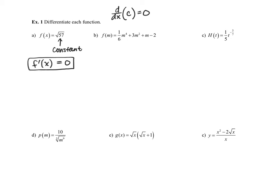Now on part b, we want to take the derivative of f(m), which is one-sixth m to the fourth plus three m squared plus m minus two. So we ultimately have four different terms here — three terms that are being added, and a fourth term that's being subtracted. We are going to compute the derivative of all four of these terms separately, and then add or subtract the resulting derivatives.